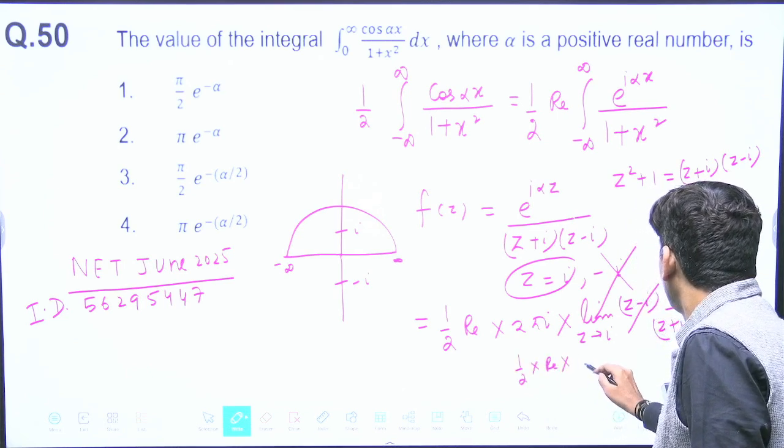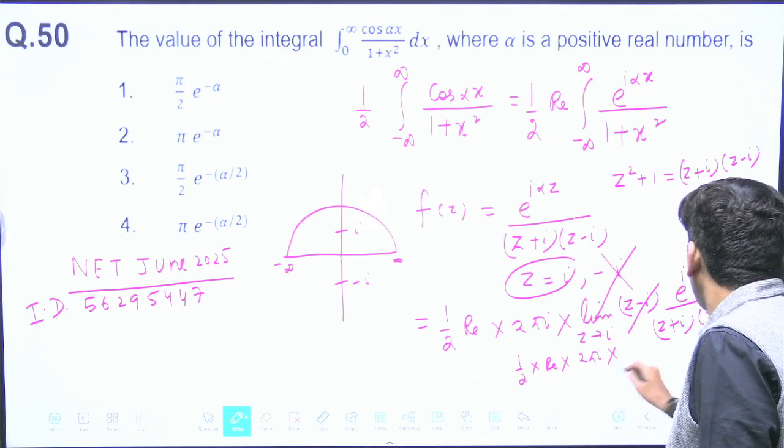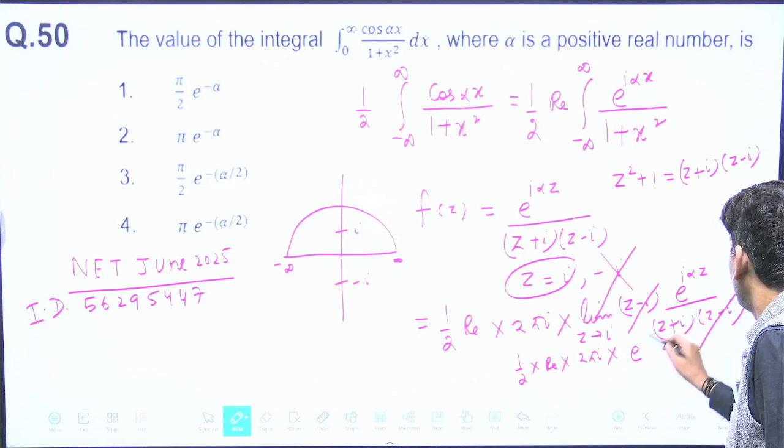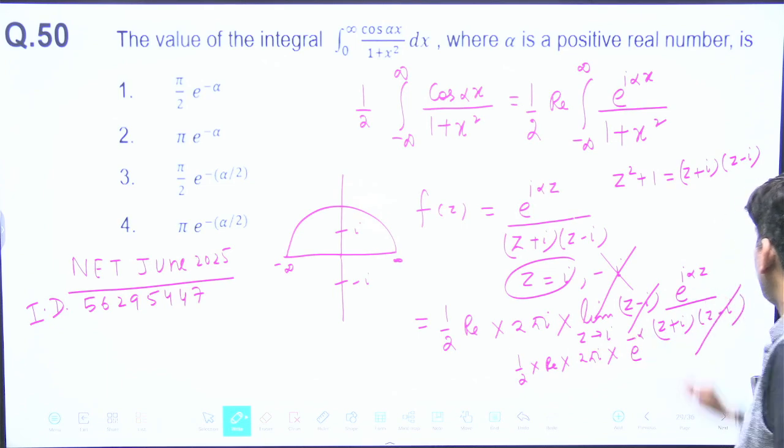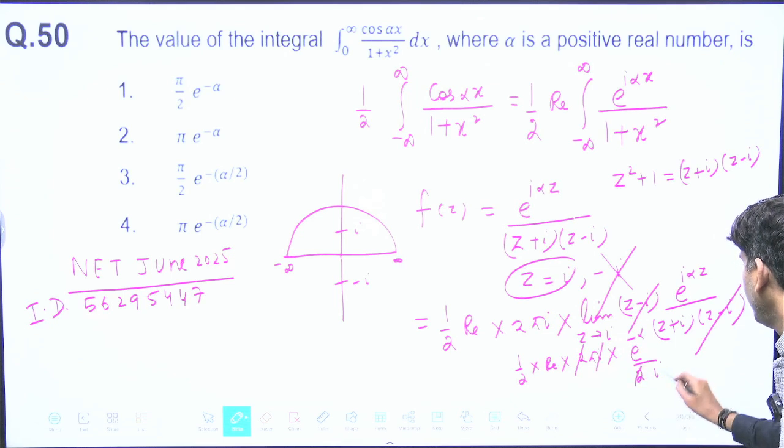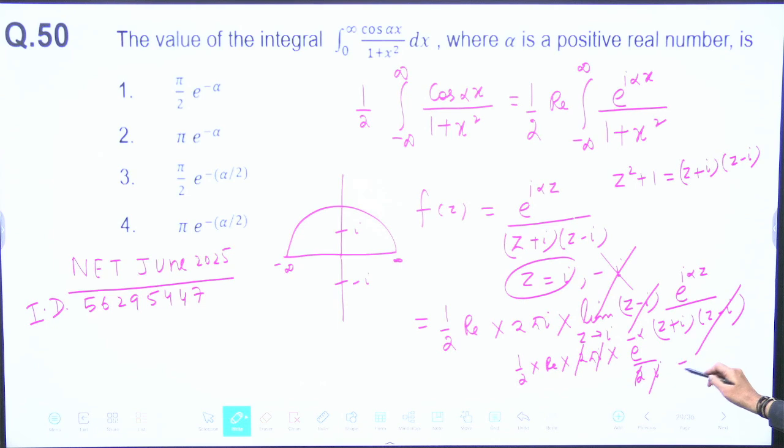This becomes half into real of 2πi times, putting z equals i: e^(i*alpha*i) / (i + i). That's e^(-alpha) because i times i is minus 1. i plus i becomes 2i, so 2i will cancel. What you're getting is π/2 times e^(-alpha).